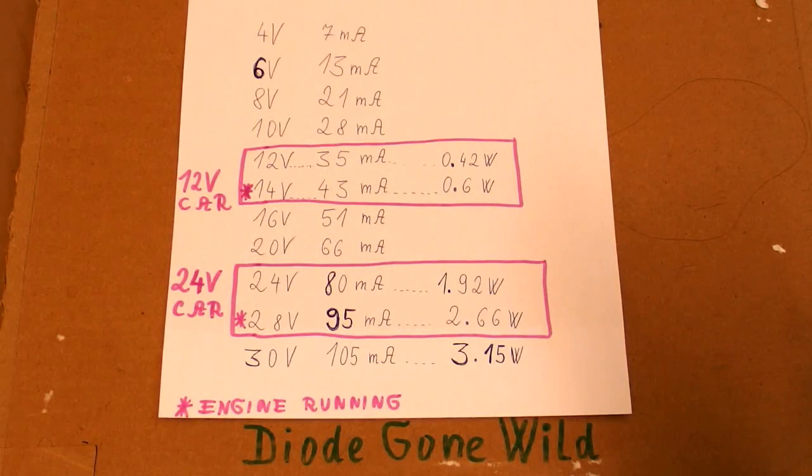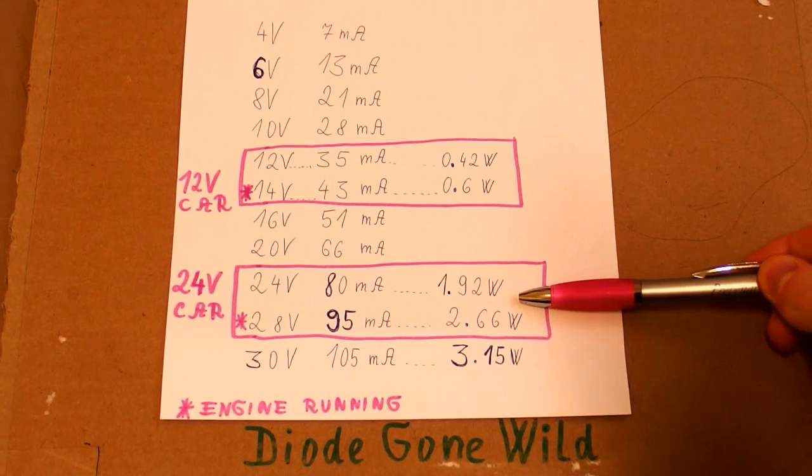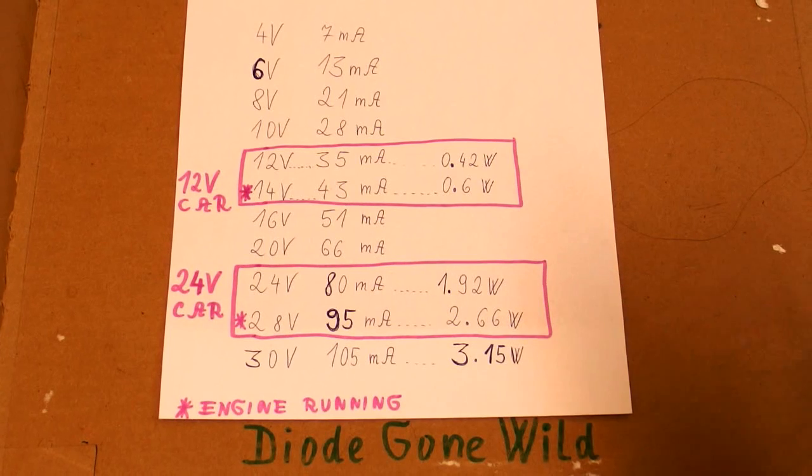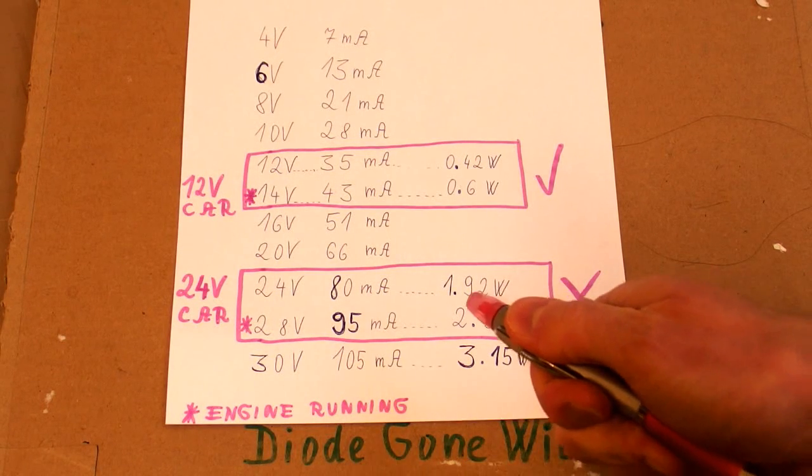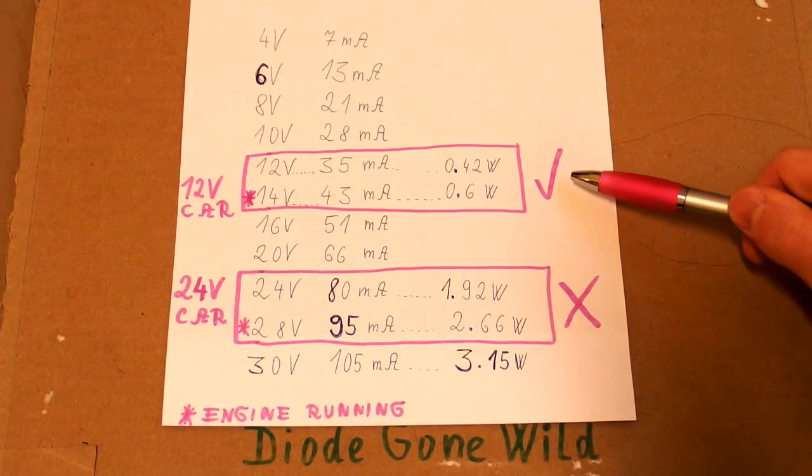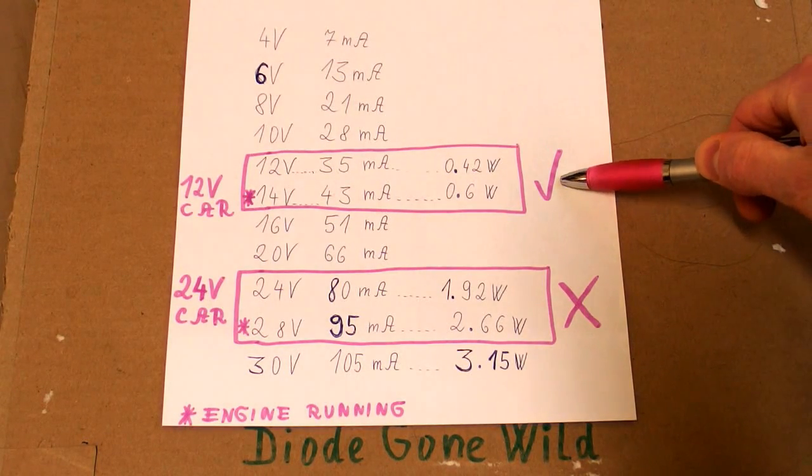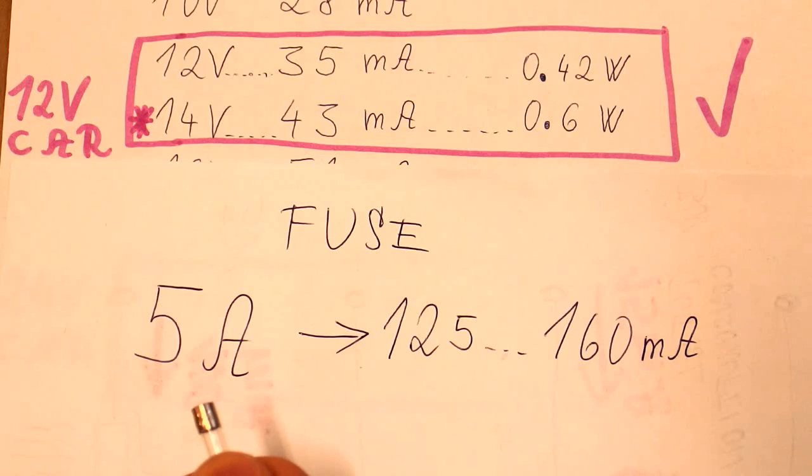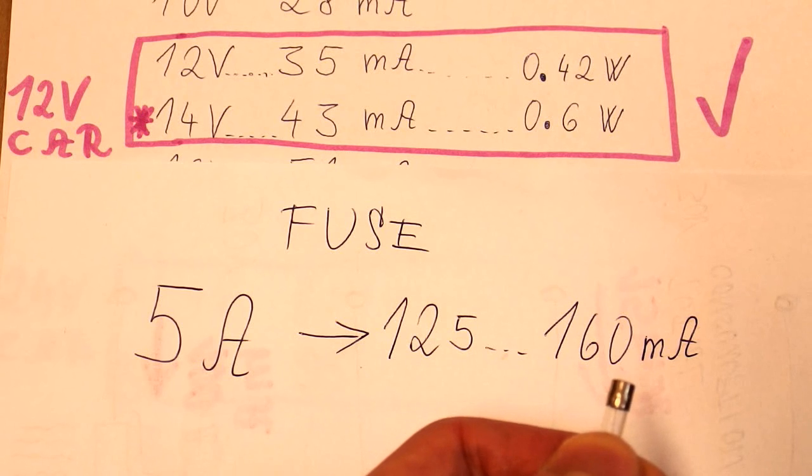So the conclusion is that it's kind of okay in a 12-volt car, but definitely not in a 24-volt car. In a 24-volt car you can just plug it in, read it and unplug it, but definitely don't operate it continuously. In a 12-volt car it may be kind of okay, but I still wouldn't run it all the time because you never know. And I would also change the original fuse to something more reasonable like 125 or 160 milliamps.